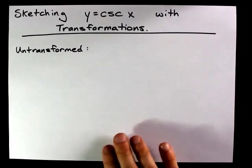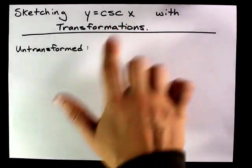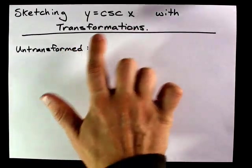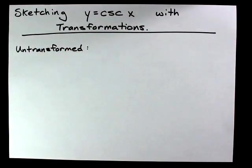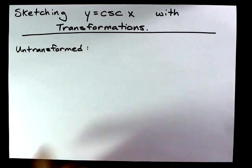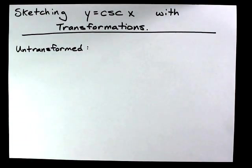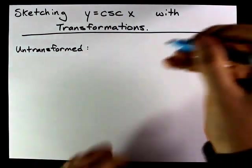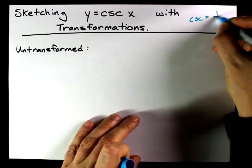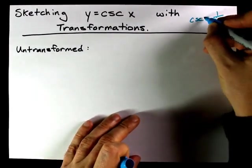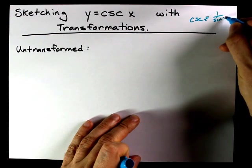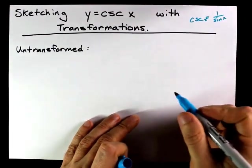Okay, today we're going to sketch cosecant of x transformed and untransformed, like no transformations. Alright, so cosecant, I hope you do realize, is the reciprocal of sine. The cosecant of a variable x is 1 over sine of x.